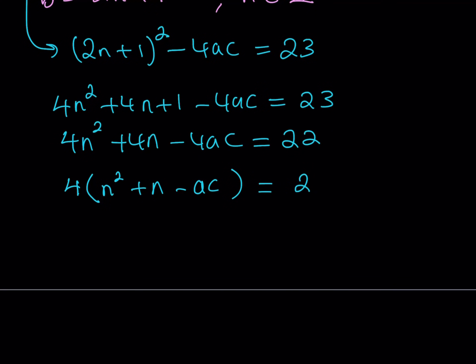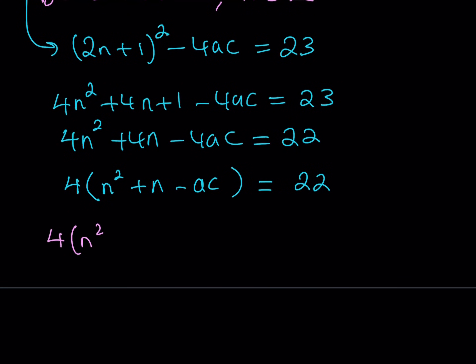It means that the expression on the left-hand side is a multiple of 4, which means that this expression on the left-hand side is divisible by 4. So our conclusion here is 4 times the quantity n squared plus n minus ac is divisible by 4 because it is a multiple of 4. Makes sense, right?